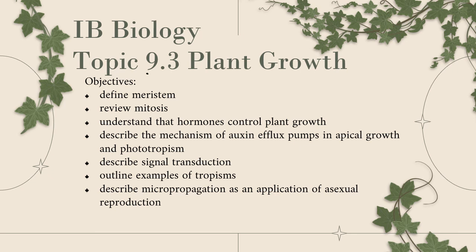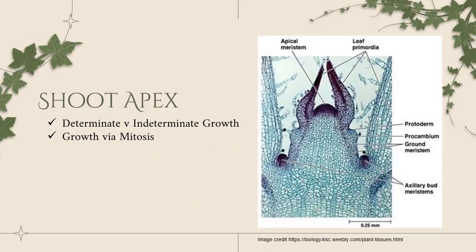Welcome to our video lecture on topic 9.3: Plant Growth. Our objectives today are to define meristem, review mitosis, talk about some of the hormones that control plant growth — specifically auxin — which uses signal transduction to make actions happen. We'll look at some examples of tropisms, growth in plants, and then talk about micropropagation.